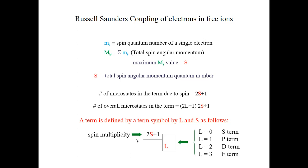We discussed the term symbols. The term symbol is defined by the total angular orbital quantum number capital L. When L equals 0, we call it an S term; when L equals 1, a P term; when L equals 2, a D term; and when L equals 3, an F term. In addition, we also have the spins to consider, and that defines the spin multiplicity, which is the number of microstates due to the spin, given by the formula 2S plus 1.